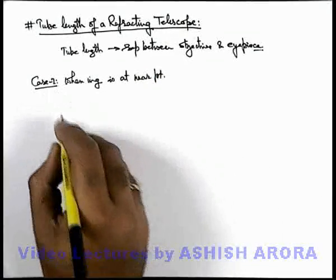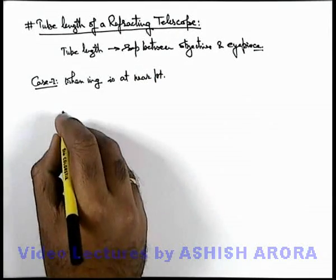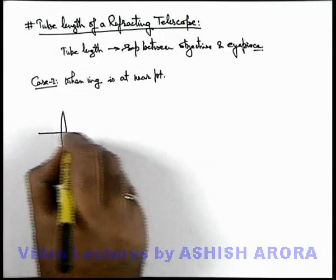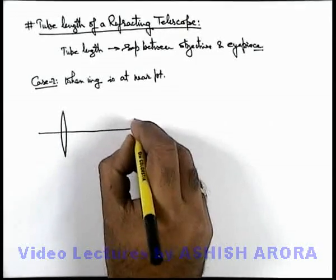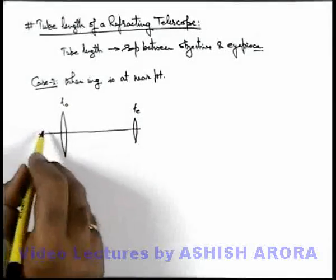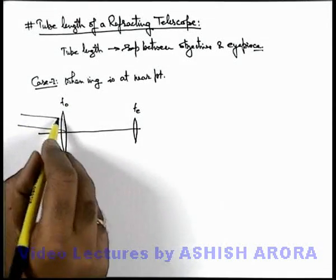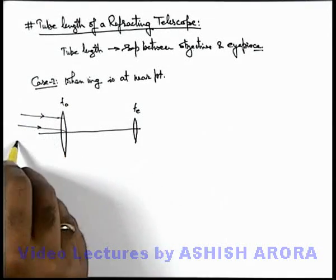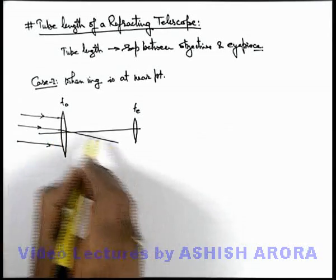We've already studied in case of a refracting telescope when parallel rays are incident on the objective lens and eyepiece lens. Parallel light rays are incident onto the objective lens. This produces an...